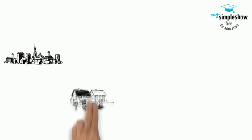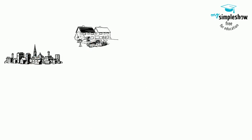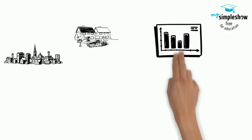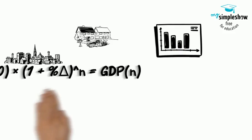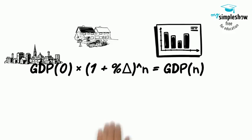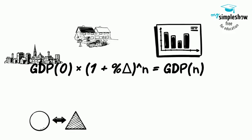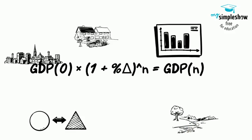Nothing is more important for people's standard of living than sustained economic growth. Even small changes in the rate of growth, when sustained and compounded over long periods of time, make an enormous difference in the standard of living. GDP growth follows an exponential path over time.